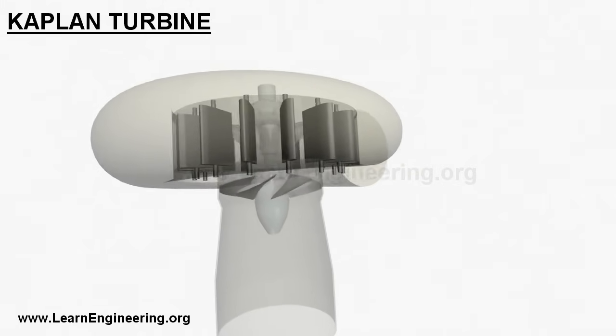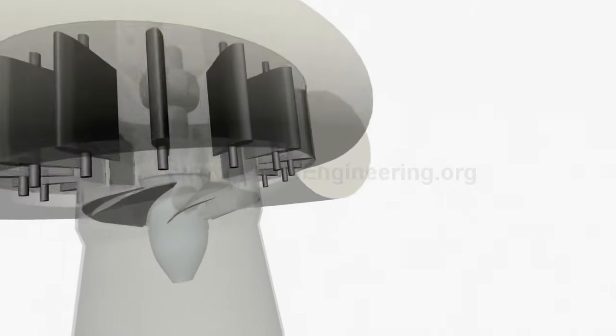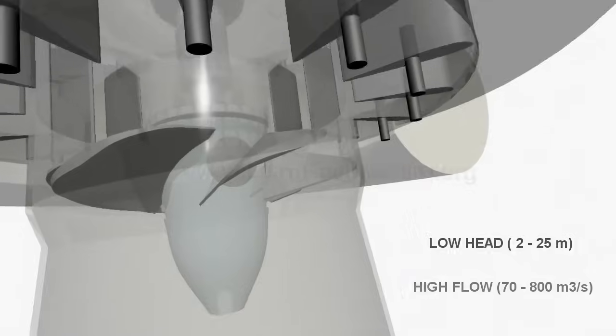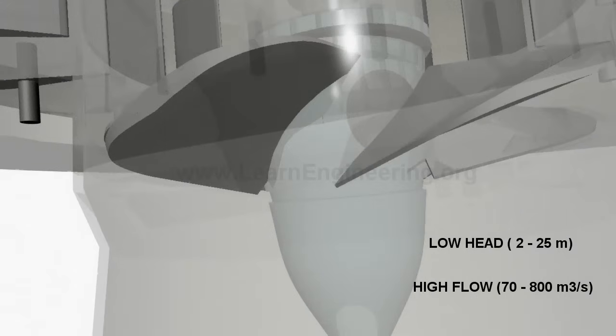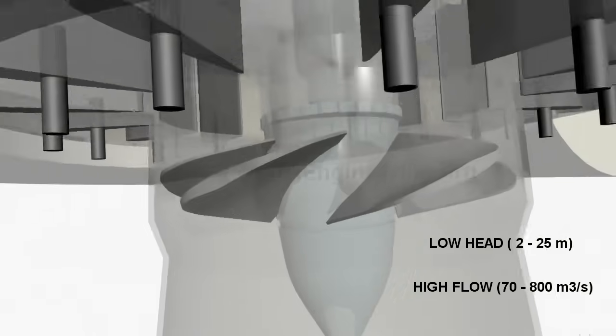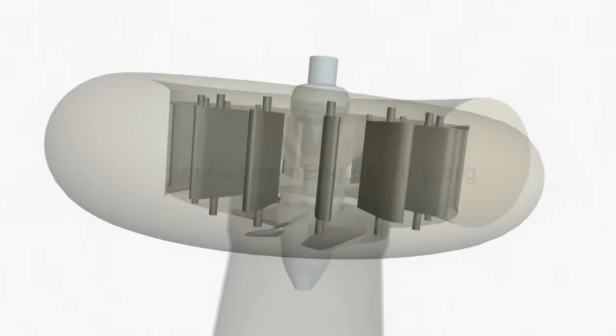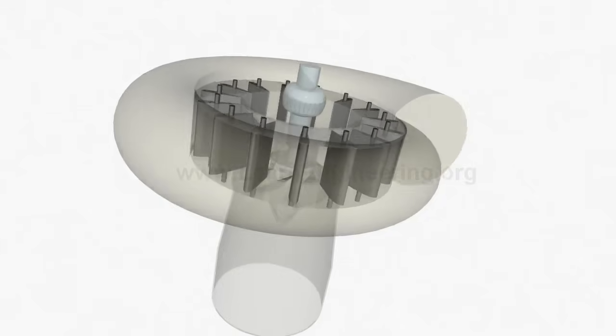Kaplan turbines are suitable for power extraction when water energy is available at low head and high flow rate, which means they are suitable for operation when water is stored in a big reservoir at a relatively shallow altitude.